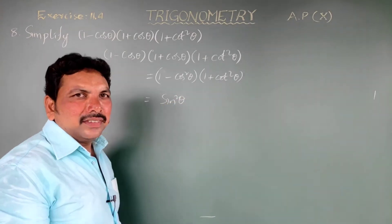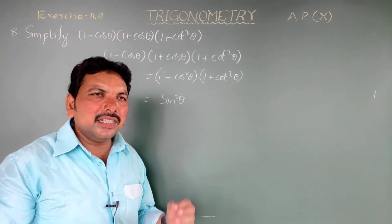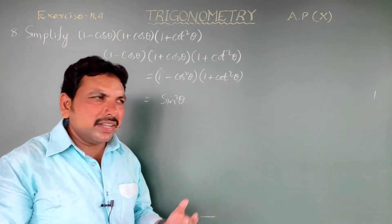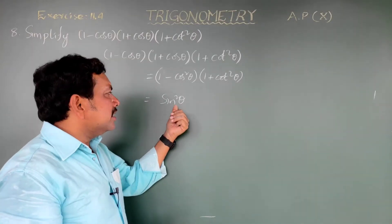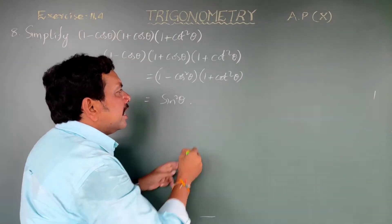cos square theta plus sin square theta equals 1, so 1 minus cos square theta equals sin square theta. In the same way, we now look at (1 plus cos square theta).